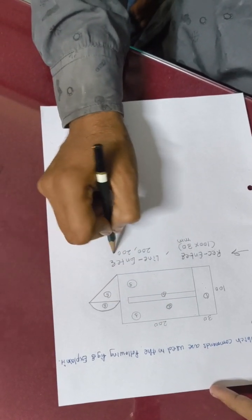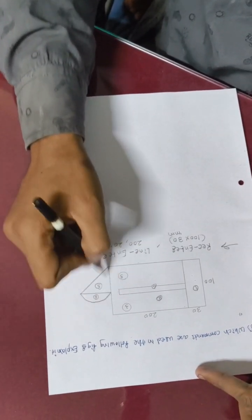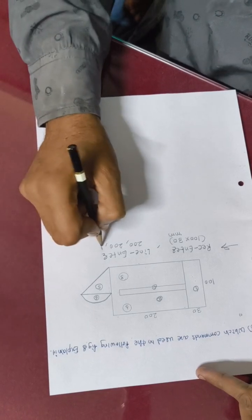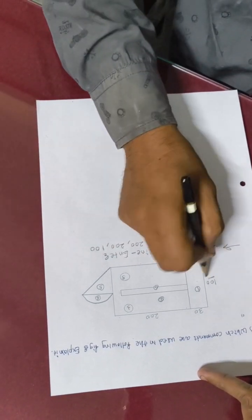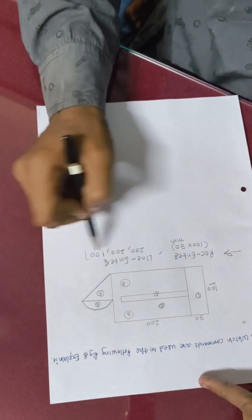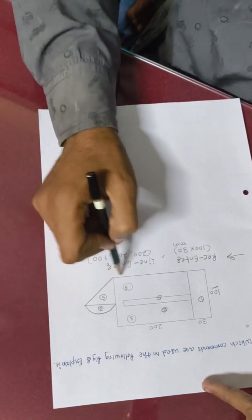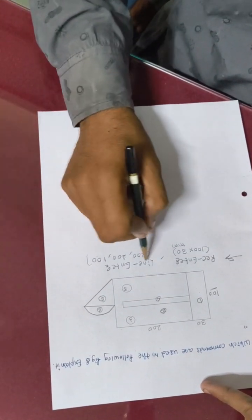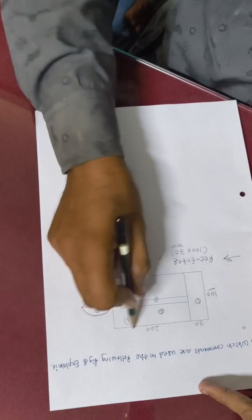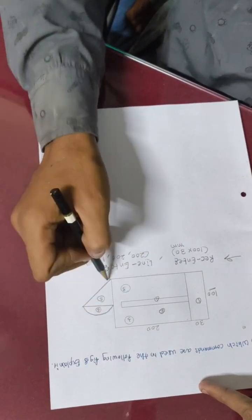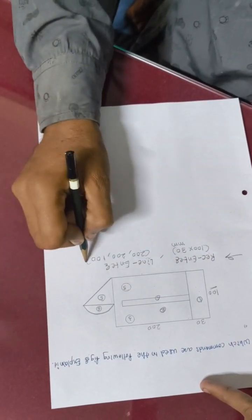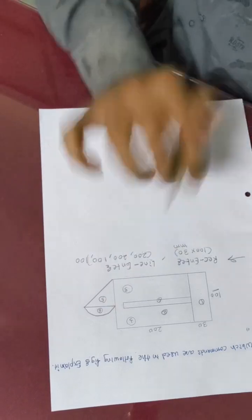This 200, two times. And the width is how much? Maybe 100mm. This figure is created with the help of line command: 200 for this, 200 for this, 100 for this, and 100 for this. This part is finished.